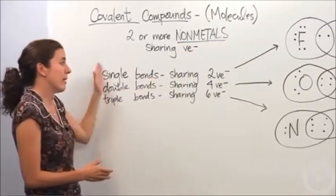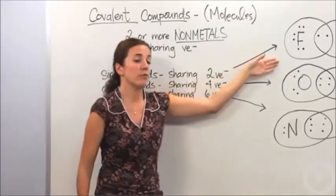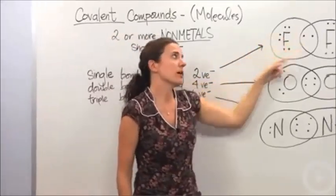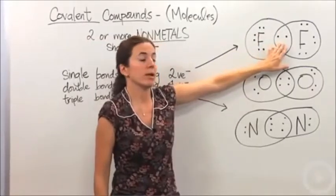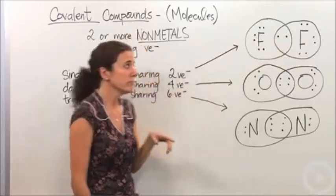Different types of bonds can occur within a covalent compound. We can have a single bond, which is a sharing of two valence electrons—for example, fluorine. Notice fluorine's sharing the two valence electrons, making them both have eight electrons around their outer shell, which is what they want.